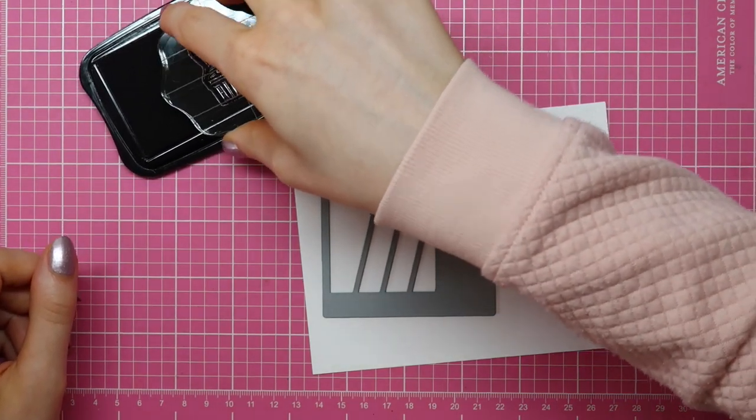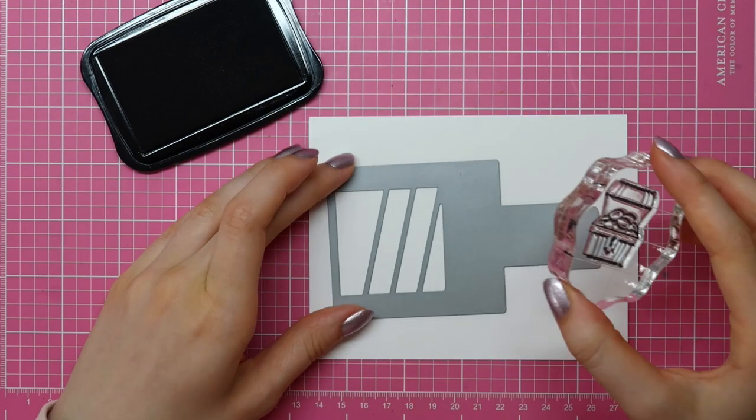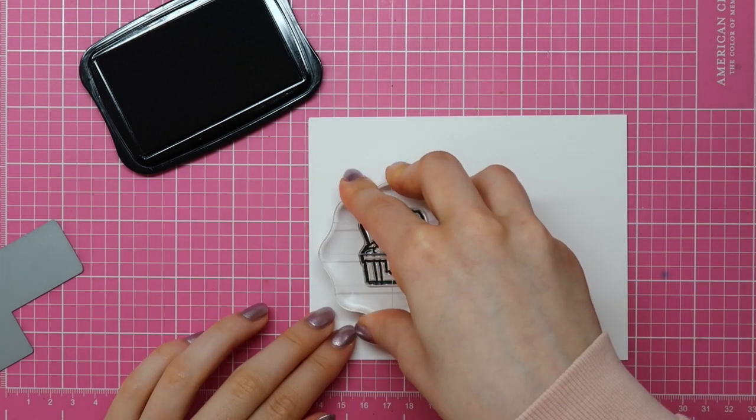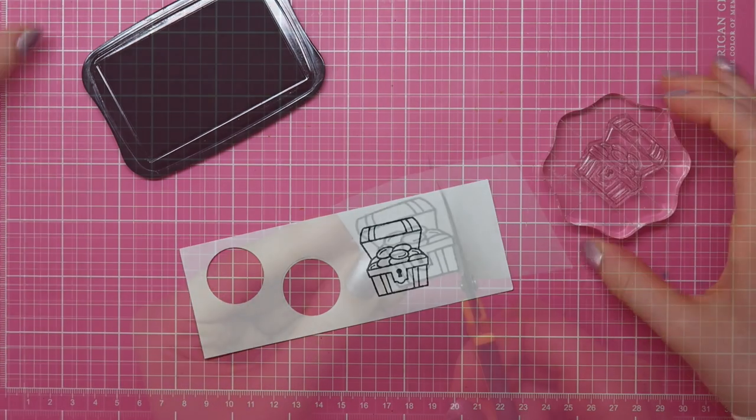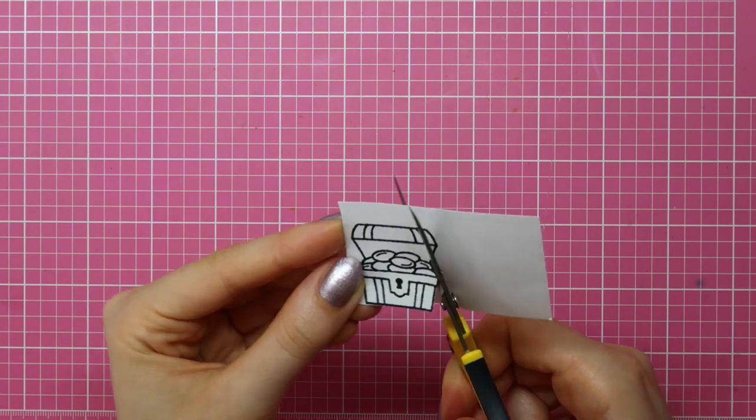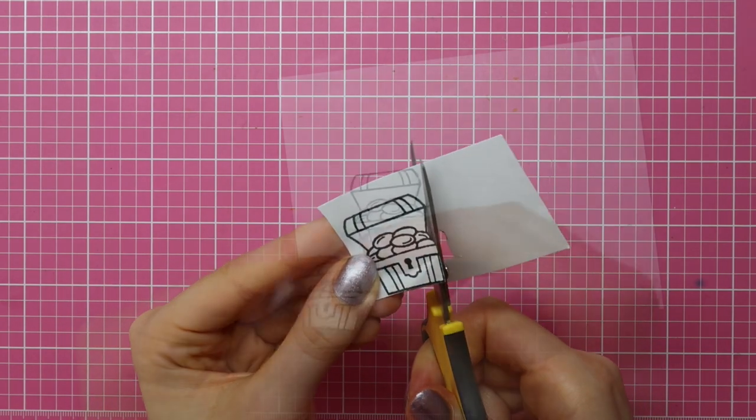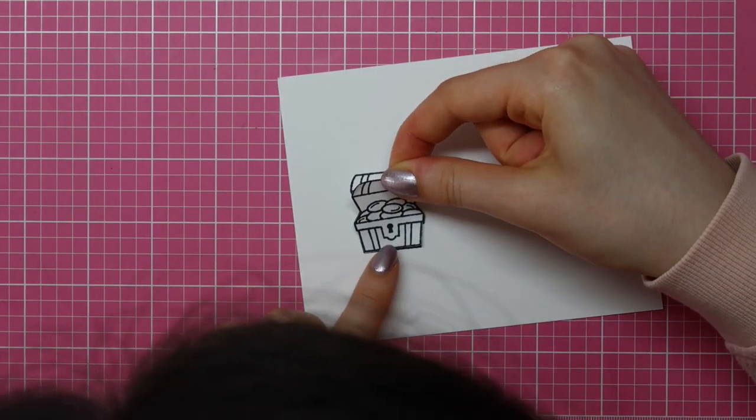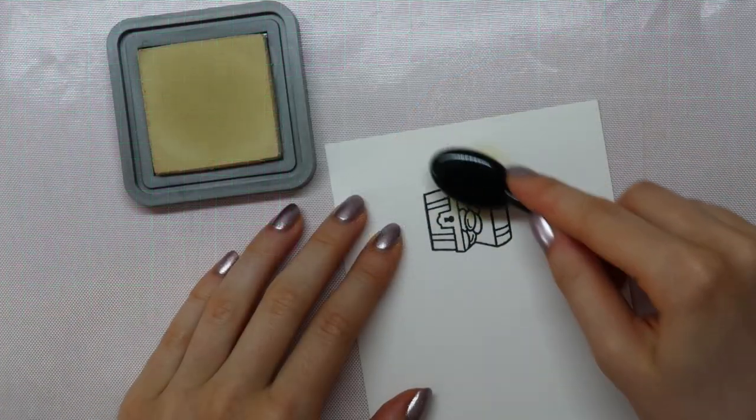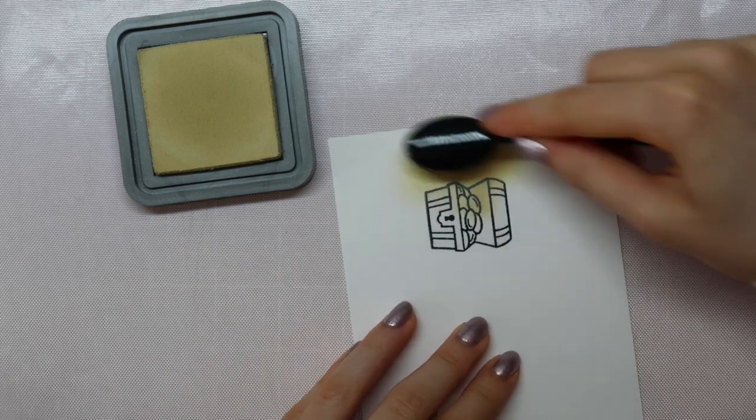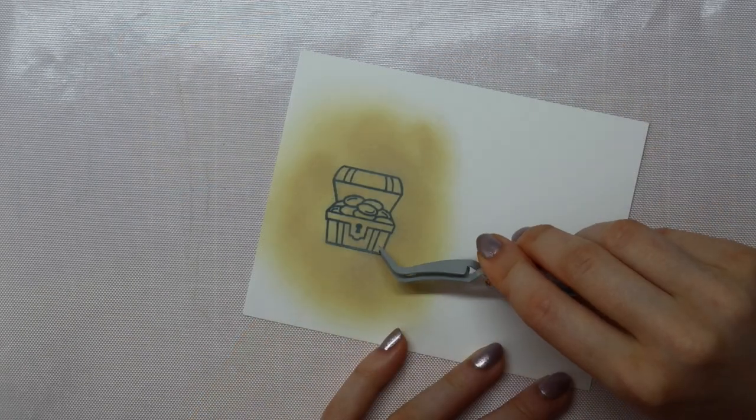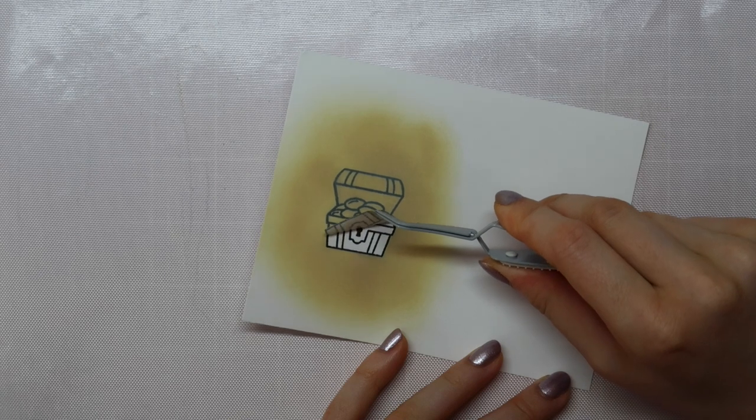I went ahead and colored some white Neenah 80lb cardstock using Antique Linen Distress Oxide Ink. Now I am stamping this treasure chest from the Ahoy Matey Stamp Set from Lawn Fawn on some white cardstock, and I stamped that once more on some masking paper. I am cutting out this image using my EK Success Cutterbee scissors and then adhering the mask on top of my stamped image. Now that I have my mask on there, I can use the Antique Linen Distress Oxide Ink to color this cardstock. I am using an inexpensive makeup brush to color this.